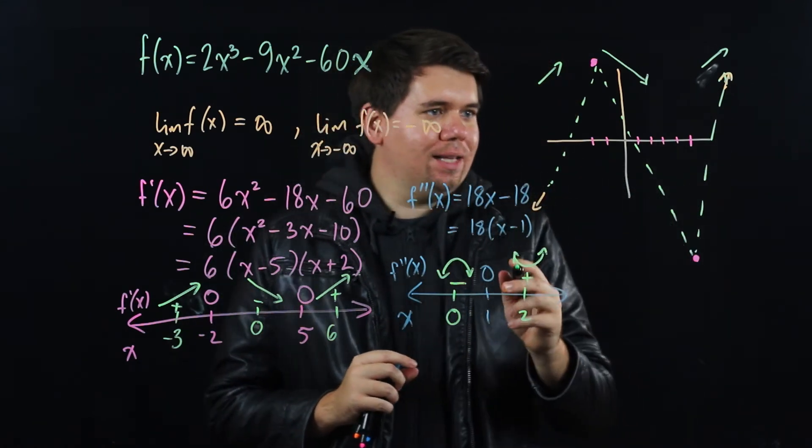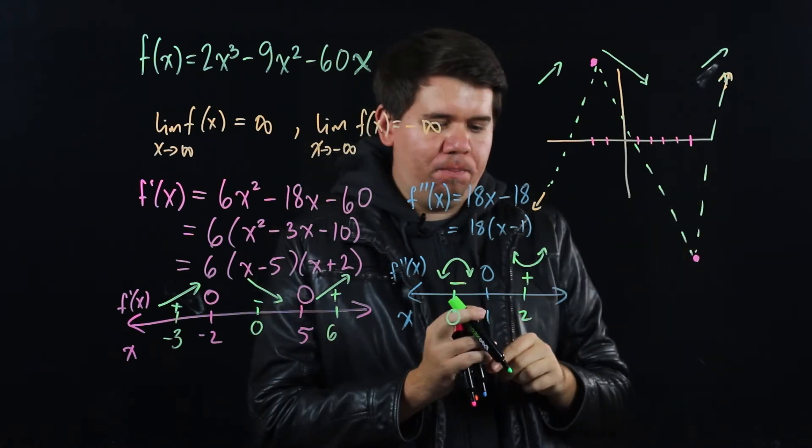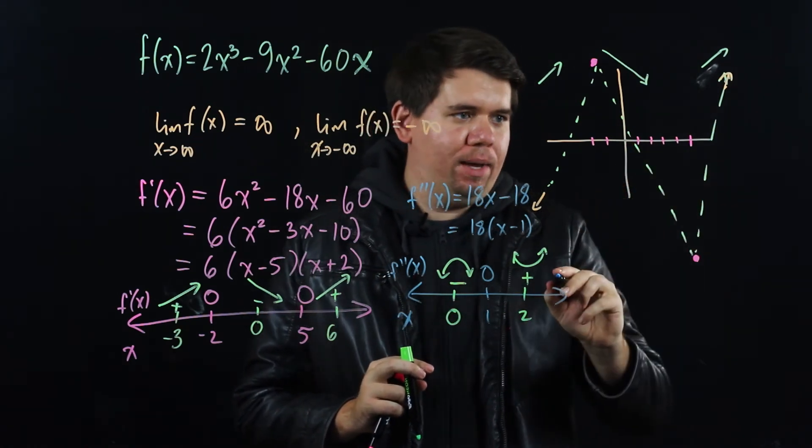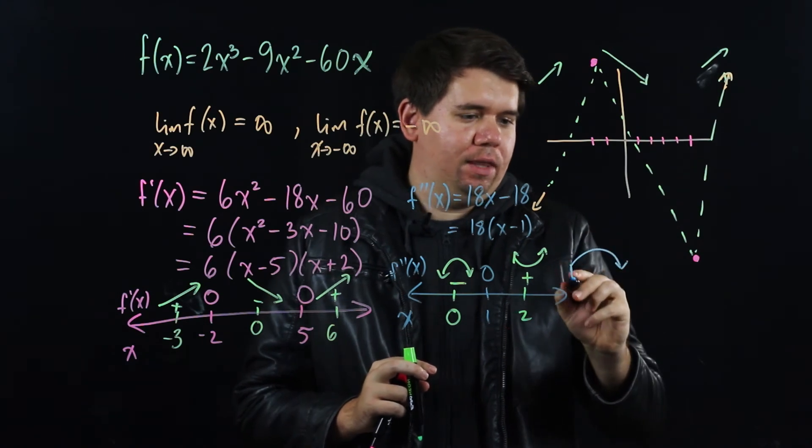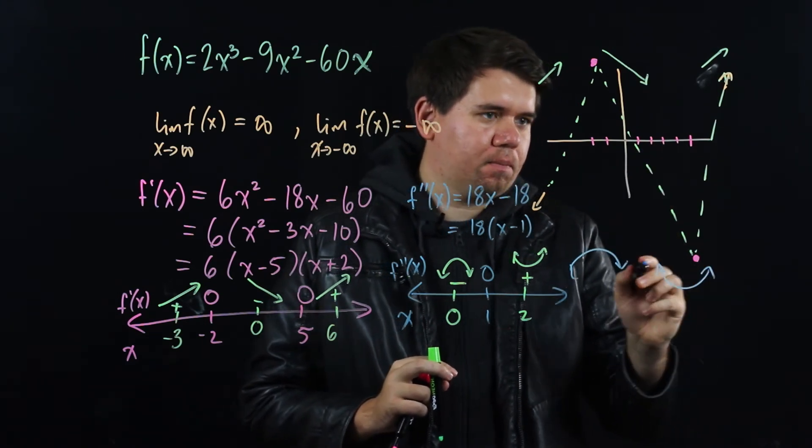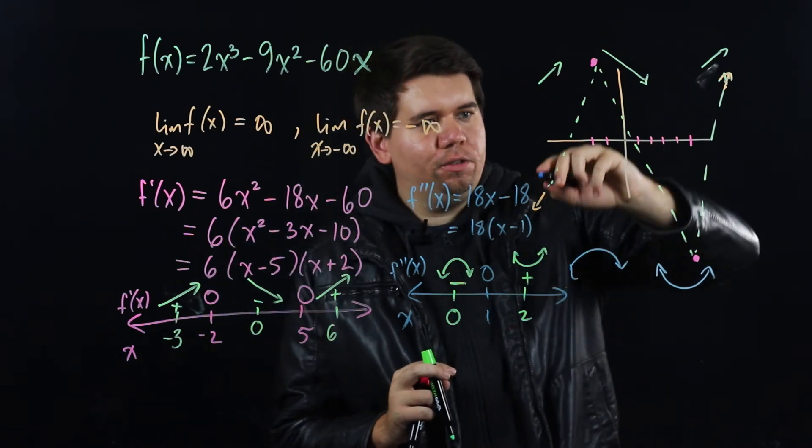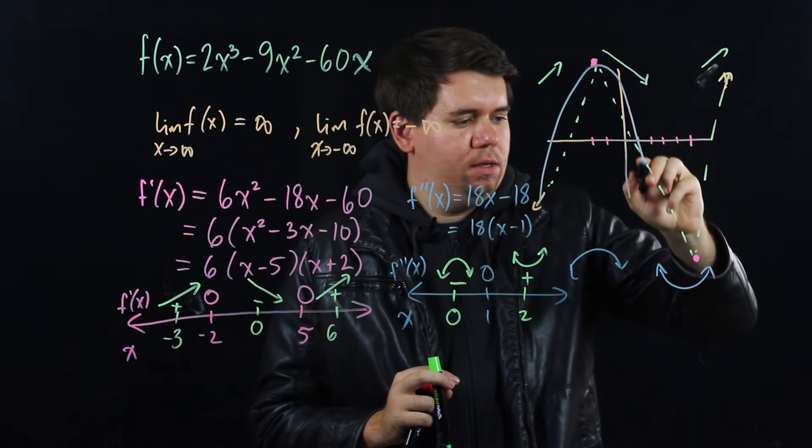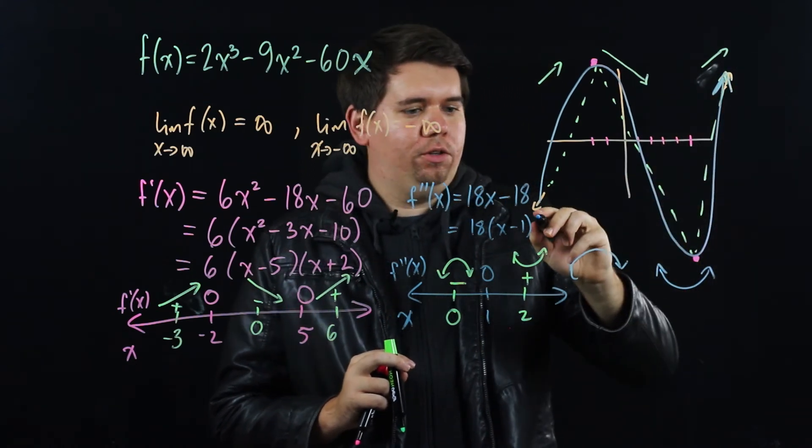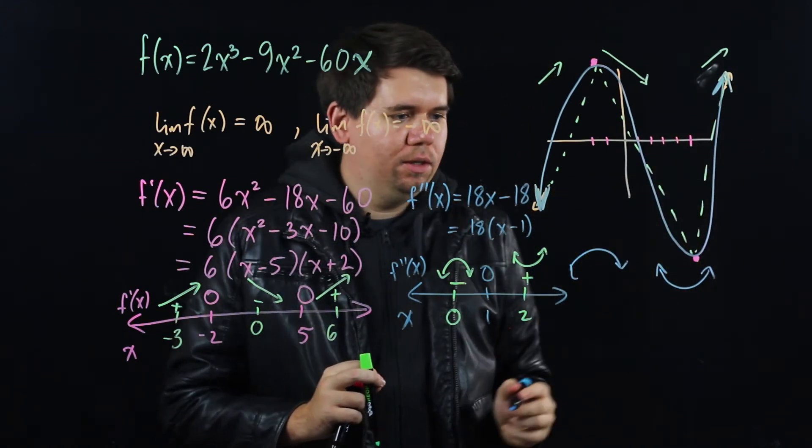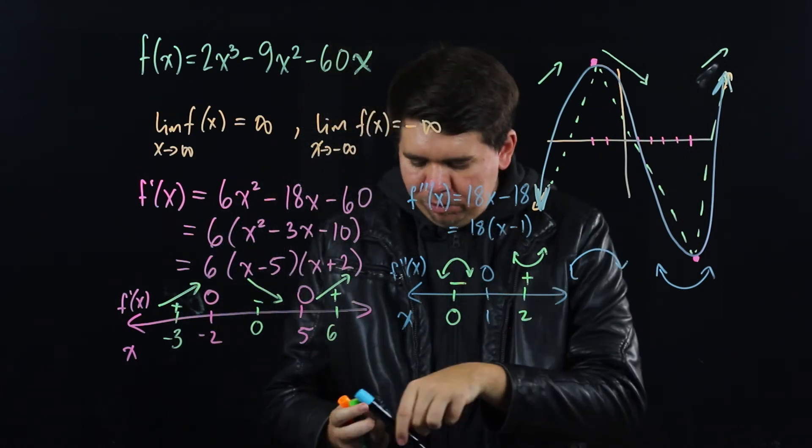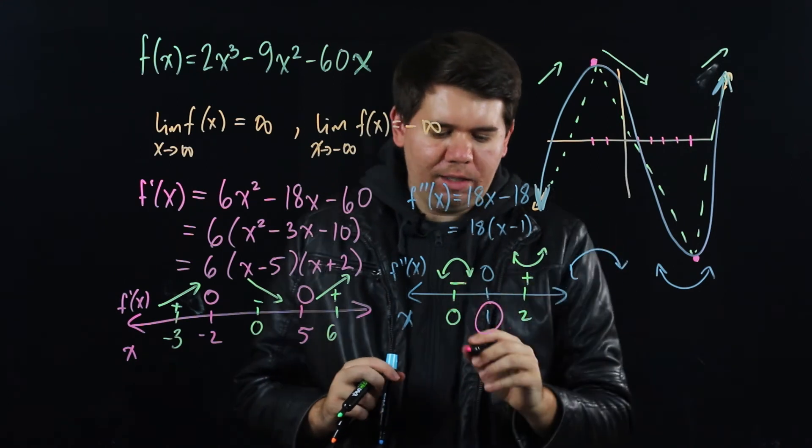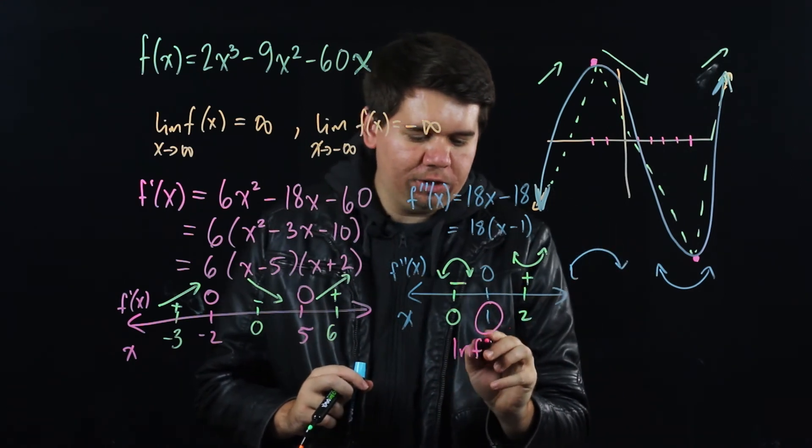What that tells me is the overall curvature of this graph should be that up until 1, up until the point 1, I'm bending down. But then after 1, I'm bending up. And so you can begin to flush this out some. I'm going to bend down some and bend up some, and your graph looks something like this. What do we call the point 1? Well, remember at 1, we say it's an inflection point because you move from concave down to concave up. That's our inflection point.